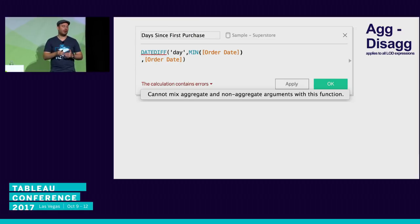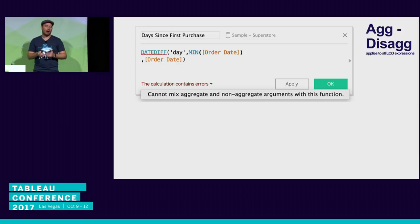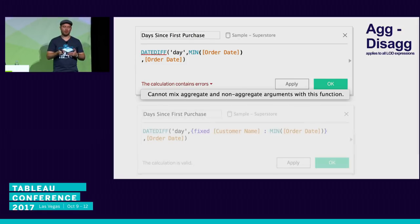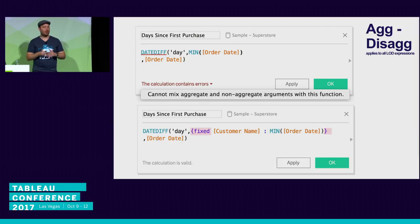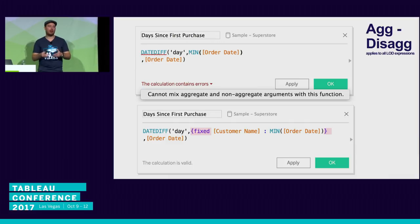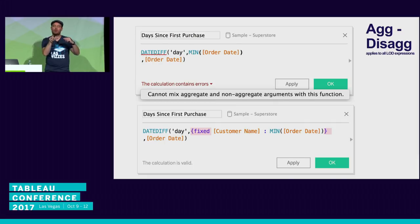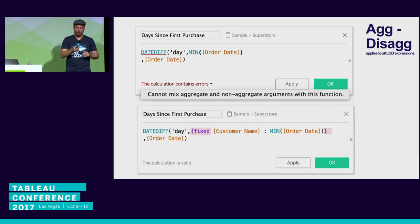Another problem LODs solve is the 'cannot mix aggregate and non-aggregate' error — probably the most Googled Tableau error of all time. If you want to compute days since the first order date, Tableau complains that MIN(Order Date) is an aggregate but Order Date is row-level. The solution is an LOD calculation: FIXED [Customer Name], [Order Date]: MIN([Order Date]). Now Tableau knows the level at which this computes, treats it as a row-level value, and joins it back — so the minimum purchase date replicates across all rows for that customer, allowing the date difference without error.